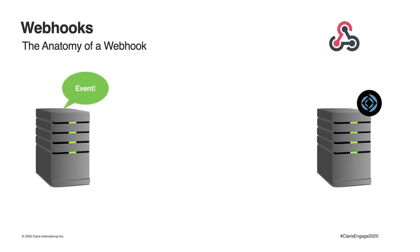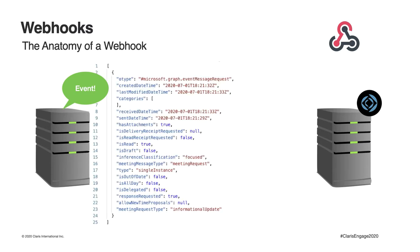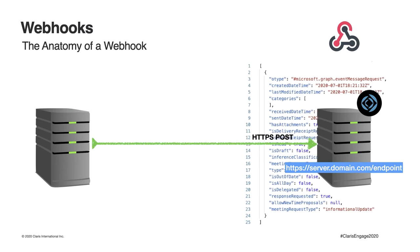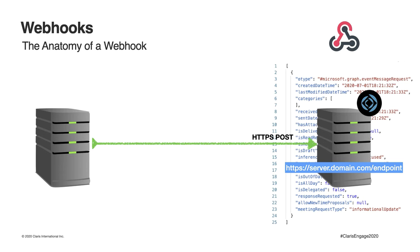When an event happens at the other system, it will express the data around that event in whatever format it chooses — for example, a meeting request from Microsoft 365. We have no control over the data format; it could be XML. We don't have control over what events the other system handles or the data format it sends. But the data it does have, it will send to the URL that we have given it.